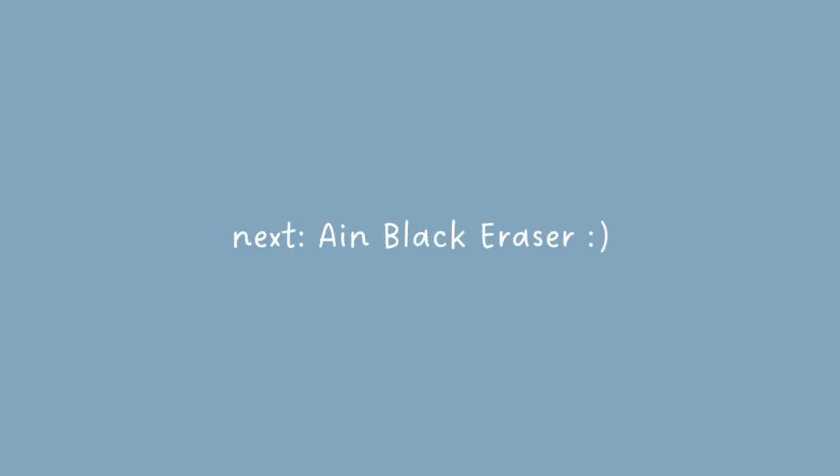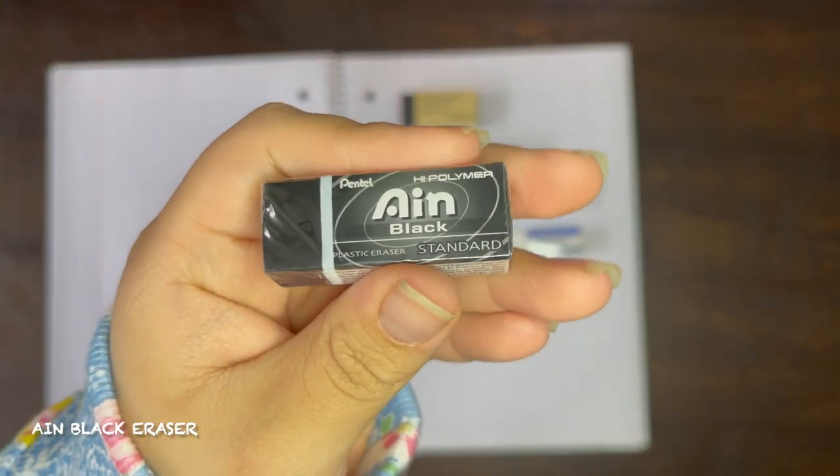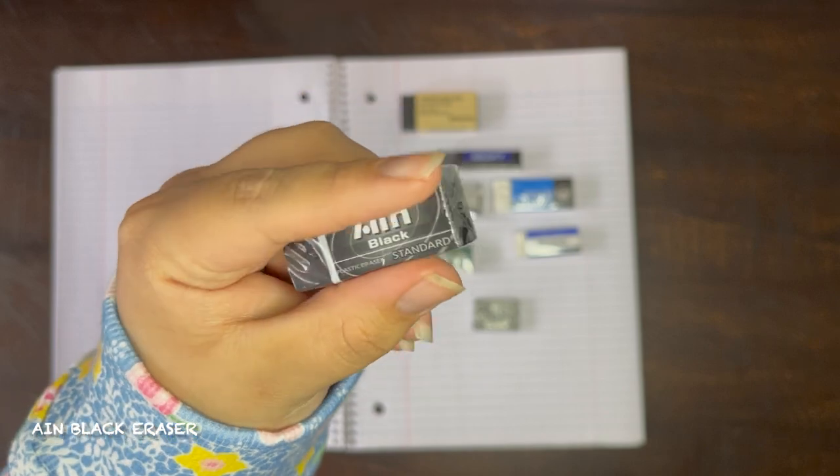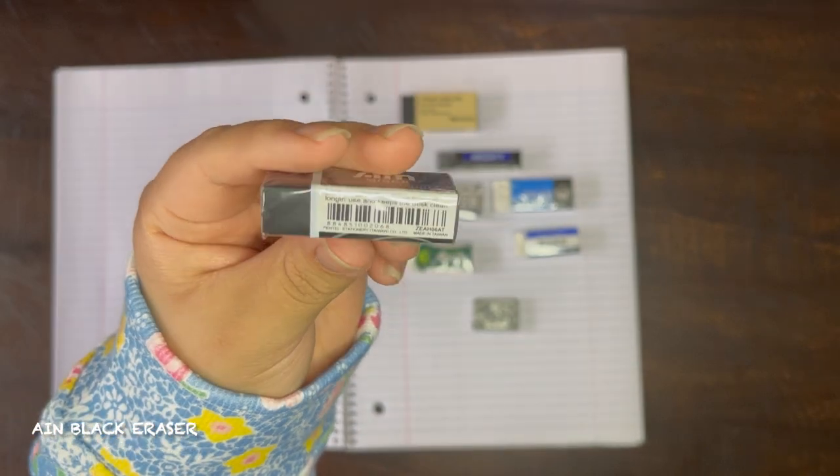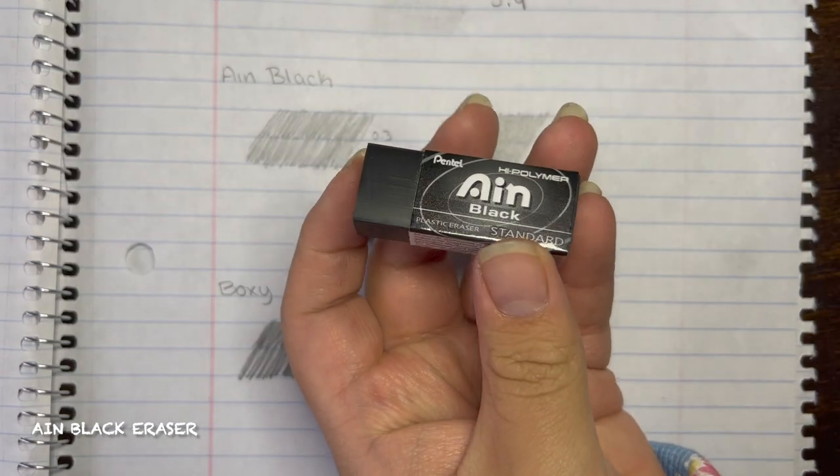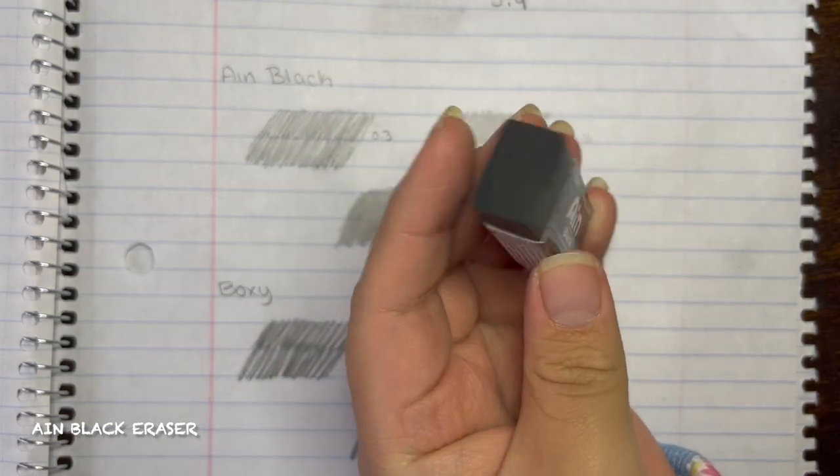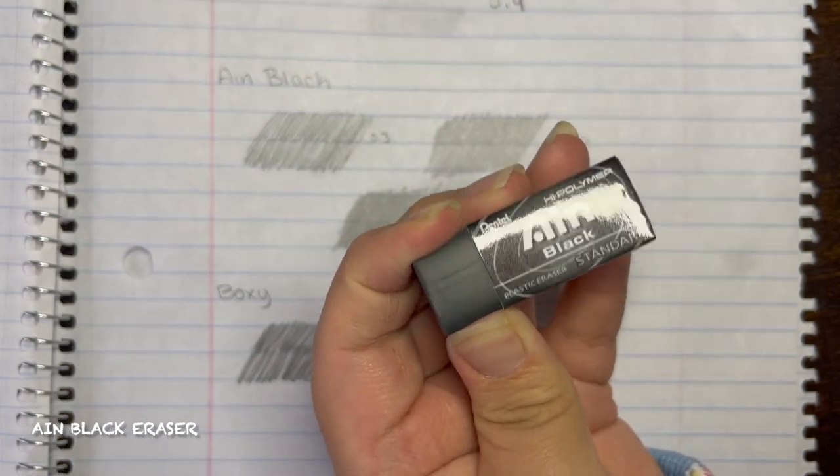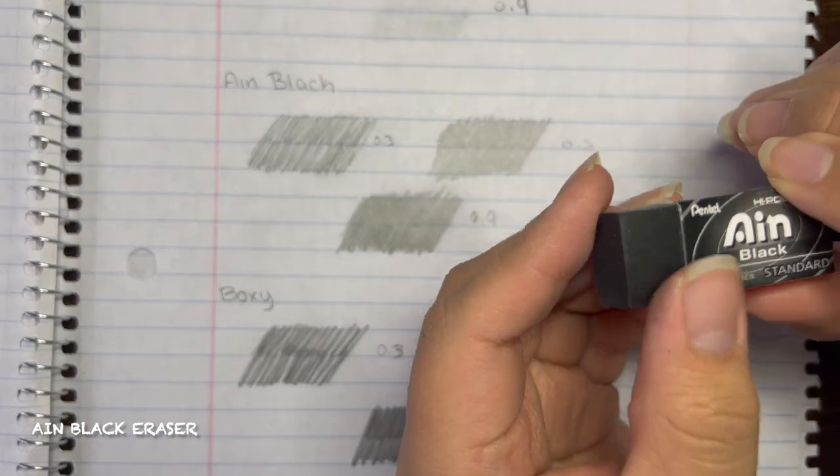This next eraser is a Pentel black eraser. This one is supposed to leave less dust and supposed to have a more cleaner feel than any other normal rubber eraser. So when I opened it up it was a lot squishier than I thought it would be. This compared to the Muji one which is already soft enough as well, so this would mean that it would feel a lot softer on the paper and maybe have less possibility of tearing.